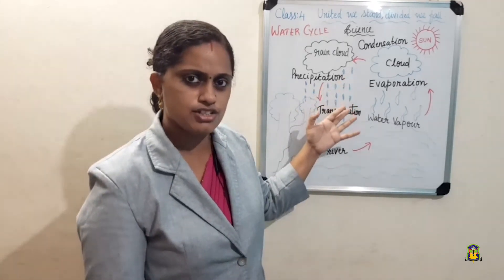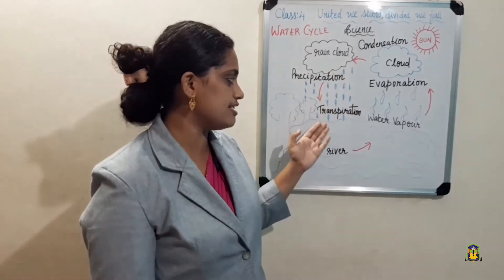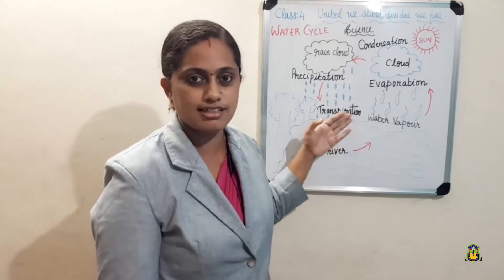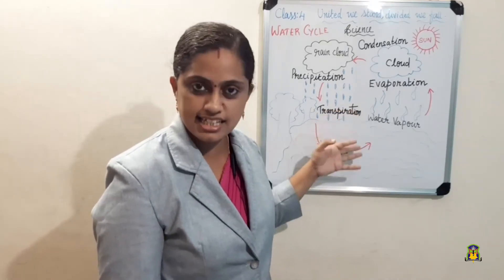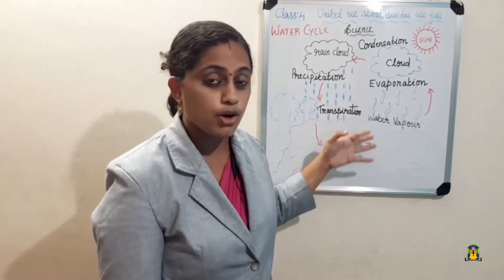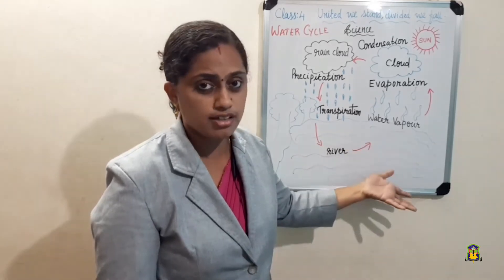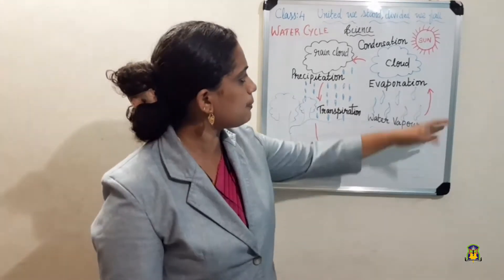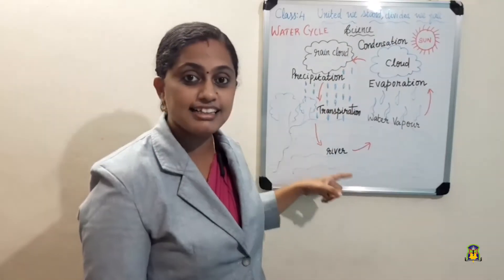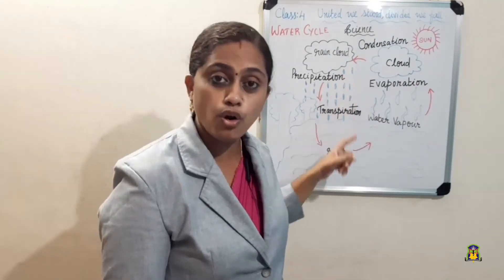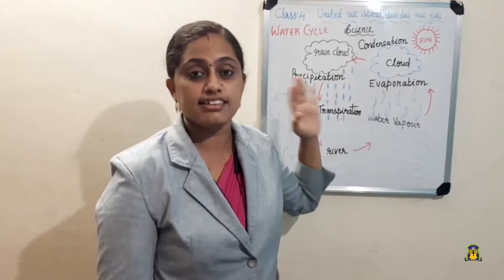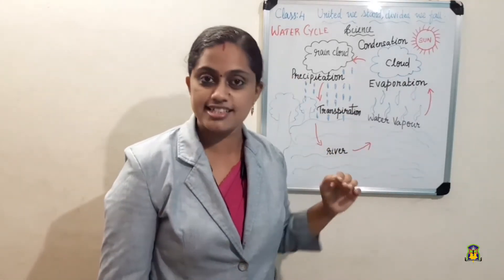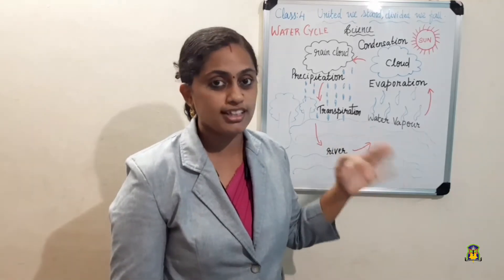By the process of precipitation, the water reaches back to our seas, lakes, oceans, rivers, etc. A cycle is happening — a flow of water is happening. This is called the water cycle.